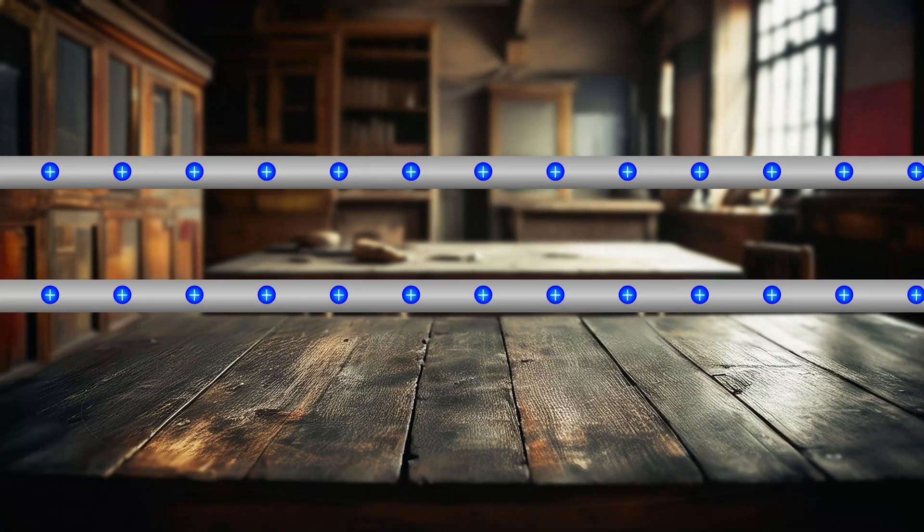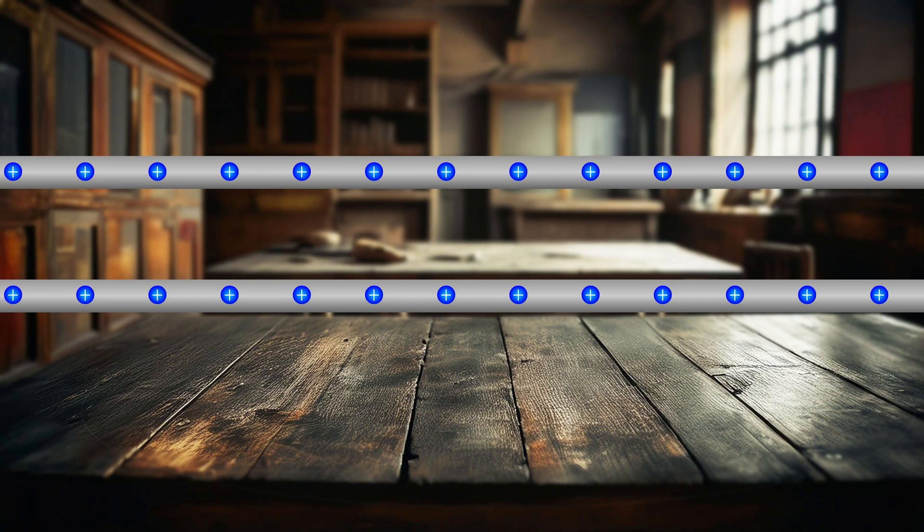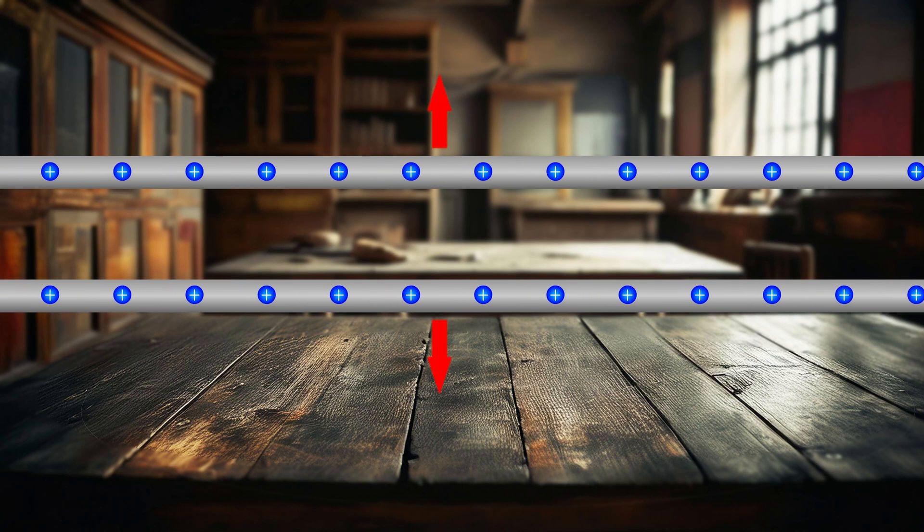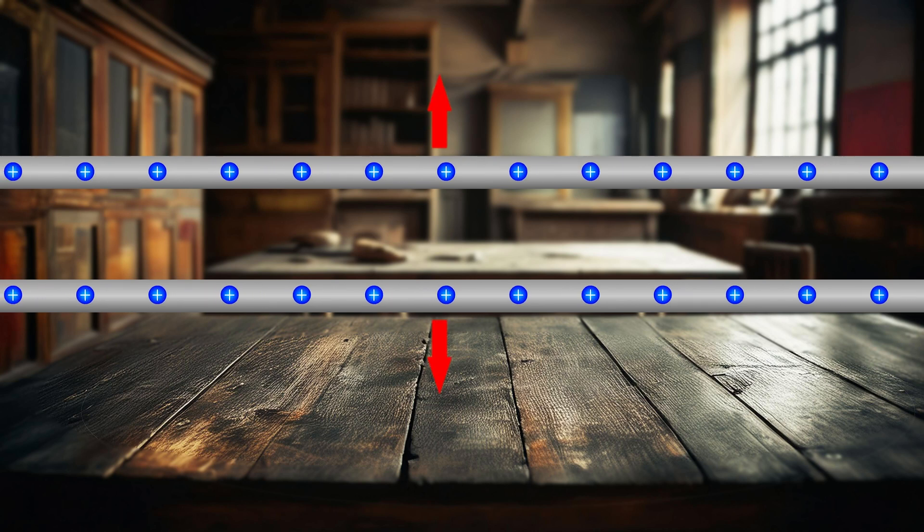But we need something that can be replicated in any laboratory without need of specific materials that were used to define the current in the first place. So how to do it? Again, current is moving charge, and moving charge is influenced by magnetic field. So two wires under current next to each other should act on each other by a force.